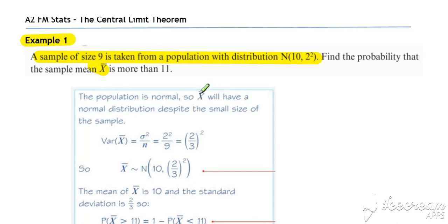The population is normal, so x bar will have a normal distribution. Remember, that's not the central limit theorem, that's just a given fact. The variance of x bar will be the variance of x divided through by n. So we get our new variance of x bar and therefore we get our new distribution of x bar.